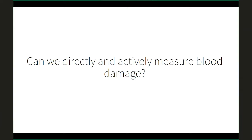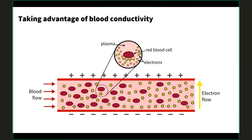We asked: can we directly and actively measure blood damage? Thinking mechanically, we wanted to take advantage of blood conductivity. Red blood cells float in plasma, which is electrically conductive — it passes electrical charge. The more blood cells present, the harder it is for electrons to flow through the plasma, because blood cells are electrically insulating. However, as cells break open they release hemoglobin, which is rich in iron and is conductive. So as more blood cells break, the overall conductivity of the blood increases — it becomes less resistant to electrical charge.